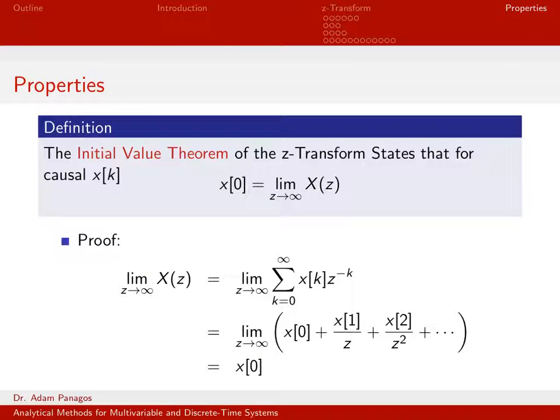The initial value theorem says that I can figure out the first value of my discrete time signal in the time domain by simply taking the limit as z goes to infinity of my z-transform. So that's very interesting. And we'll actually go ahead and let's prove that one right here. We haven't proven many of these properties because many of these properties are proven in the exact same way as we established the corresponding discrete-time Fourier transform properties, so we didn't do a lot of those proofs.